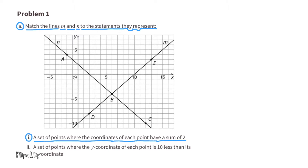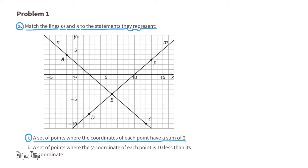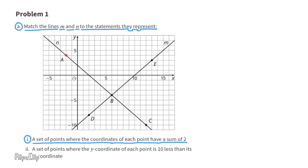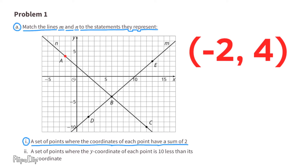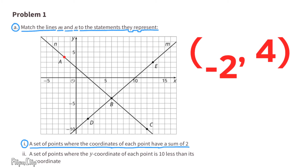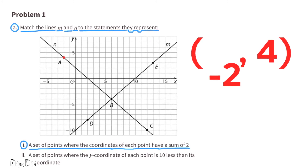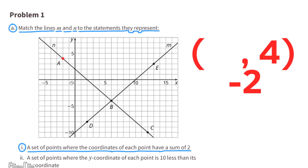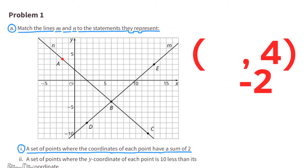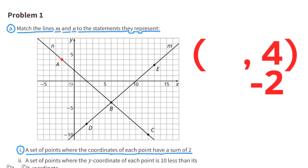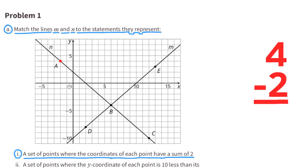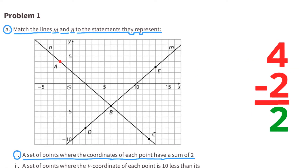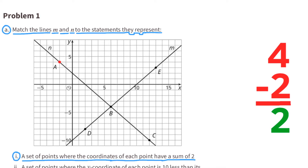Let's look at line N and try point A. The coordinates for point A are negative 2 and 4. That's like negative 2 plus 4, or 4 plus a negative 2, which is the same as 4 minus 2. And 4 minus 2 equals 2, so we can say that the sum is 2.